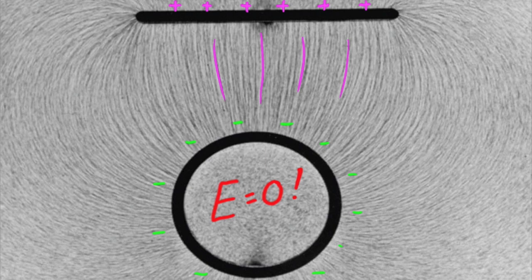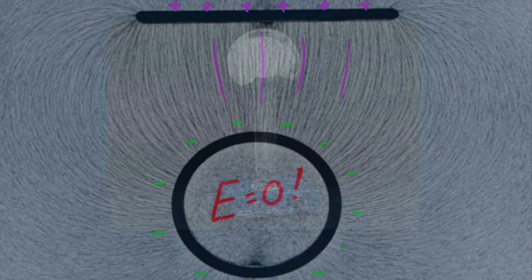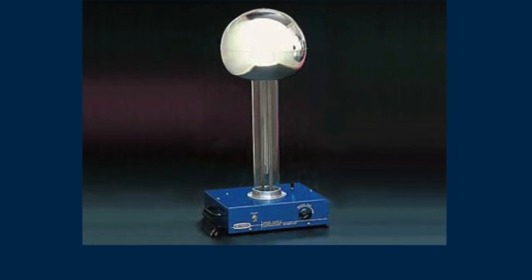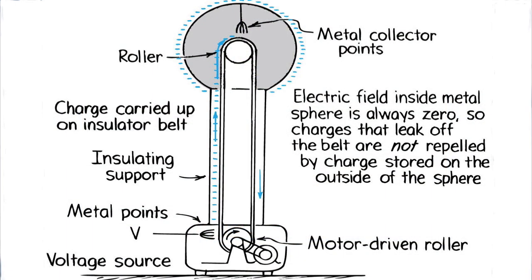The fact that no field results inside a charged conductor is nicely employed in the Van de Graaff generator. Let's look at the operation of a Van de Graaff generator. We see that a voltage source leaks charge off metal points, in this case electrons. An insulating belt carries the electrons up inside an electrically insulated tube that supports the hollow dome above. Electrons leak off onto the metal point collectors at the top of their path, and repel one another and gather on the outside of the metal sphere.